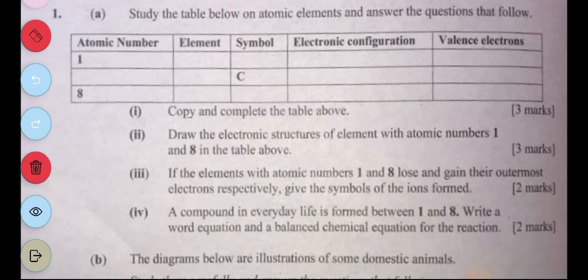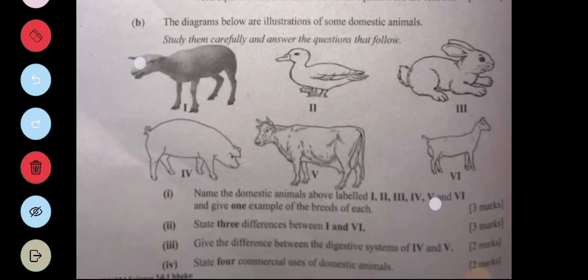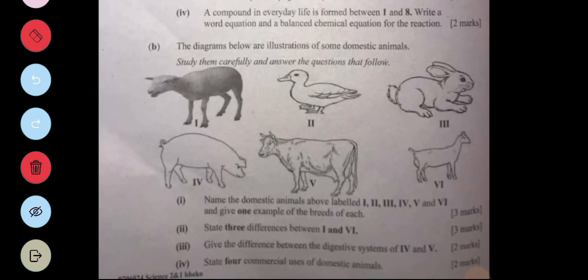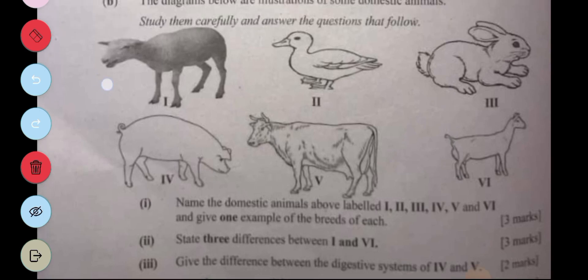Now to the last and final part. We have diagrams of certain domestic animals or farm animals. Study them carefully and answer the questions that follow. Name the domestic animals labeled one to six and give one example of the breeds for each.